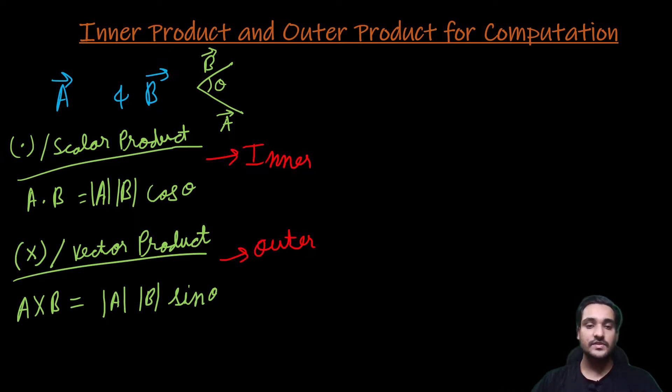In quantum computing, these two products are called as inner products and outer products. But we need to know what is its application.